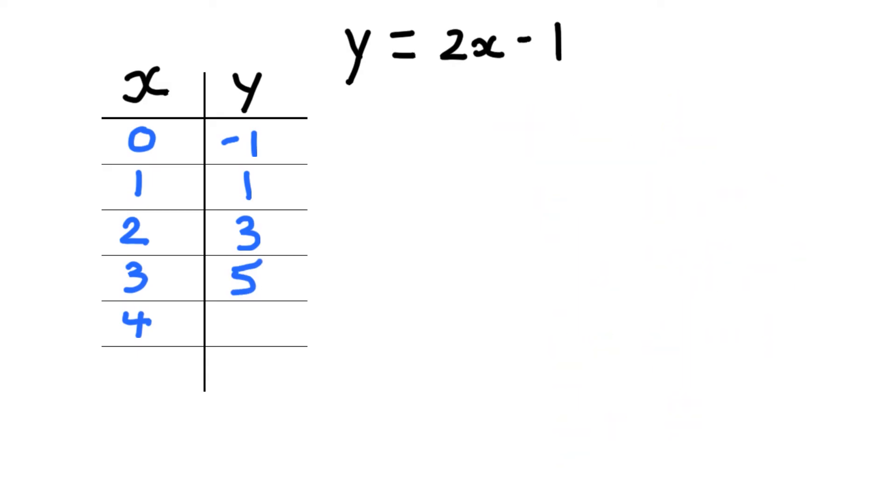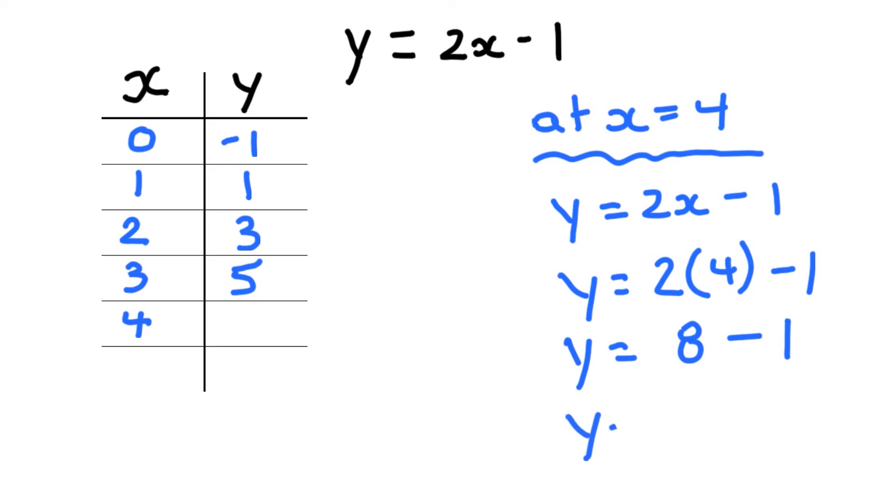Now we're going to do our final one. We need to know the y value when x is equal to 4. So at x is equal to 4, start with our general equation, plug in 4 for x. And now we can do the calculations. 2 times 4 is 8 minus 1, and then 8 minus 1 is 7.